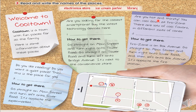Are you hot and thirsty? You can cool down at Frost Zone. There are lots of cool flavors in different sizes of cones. How to get there? Frost Zone is on Box Avenue. Go straight on Main Street and turn right onto Silver Road, and then left onto Box Avenue.